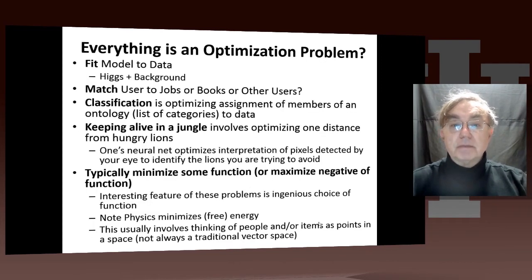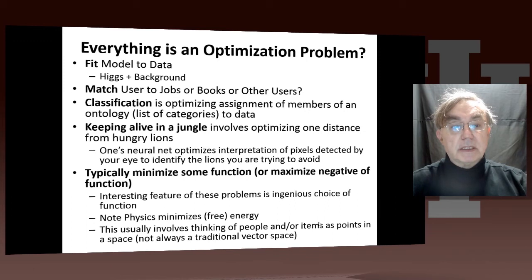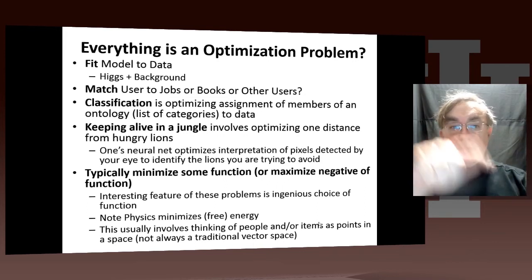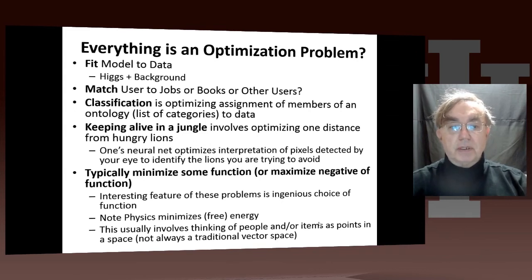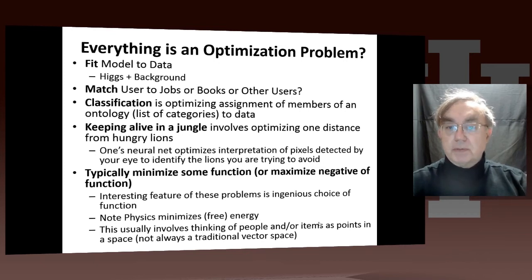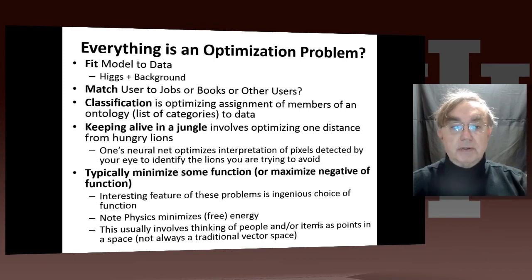Here we have a little diversion: everything is an optimization problem. When we were doing the Higgs boson analysis, we saw how to fit models to data — we had a background and then a little bump which was the Higgs. That's an optimization problem to fit that model to the data. We've already done matching of users to jobs or books, users to books, or in LinkedIn, users to other users.